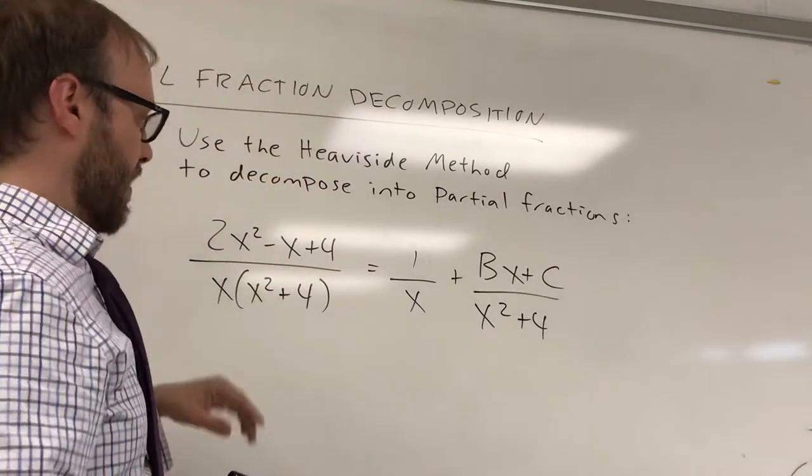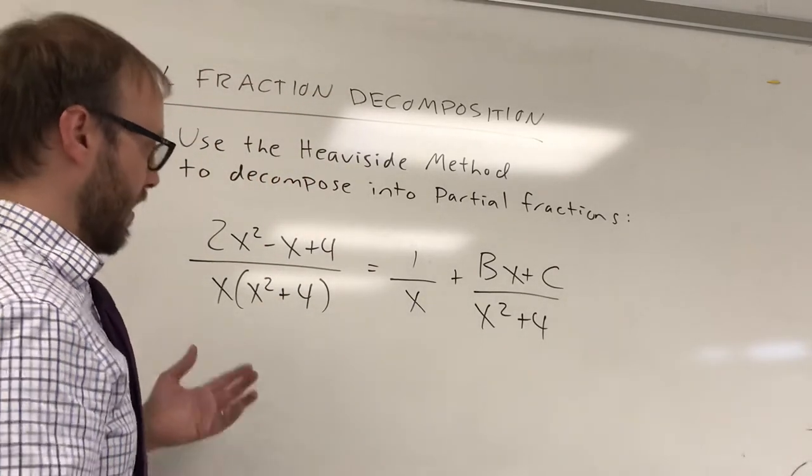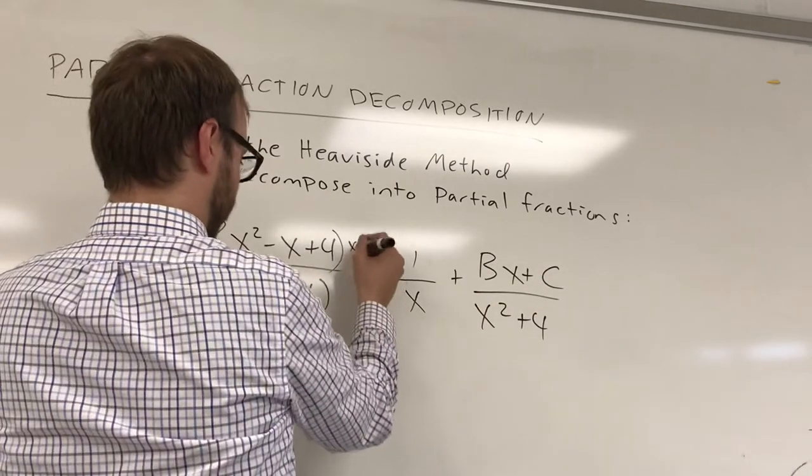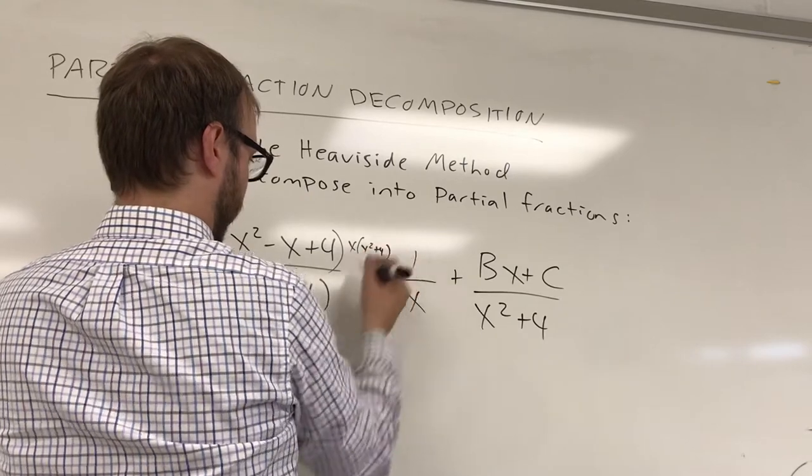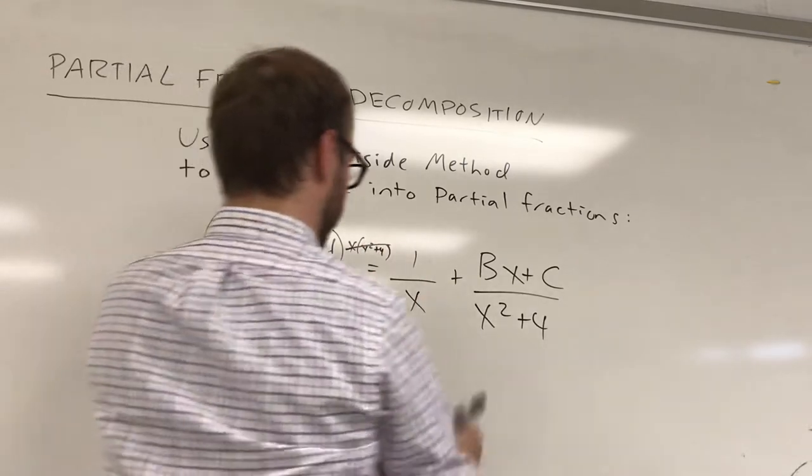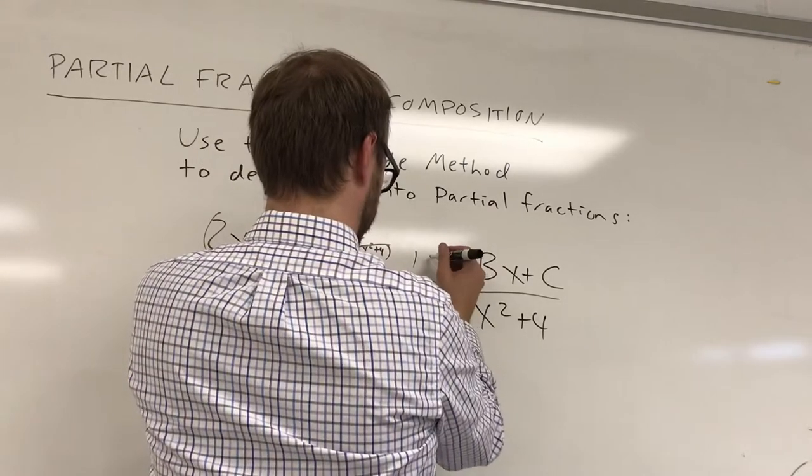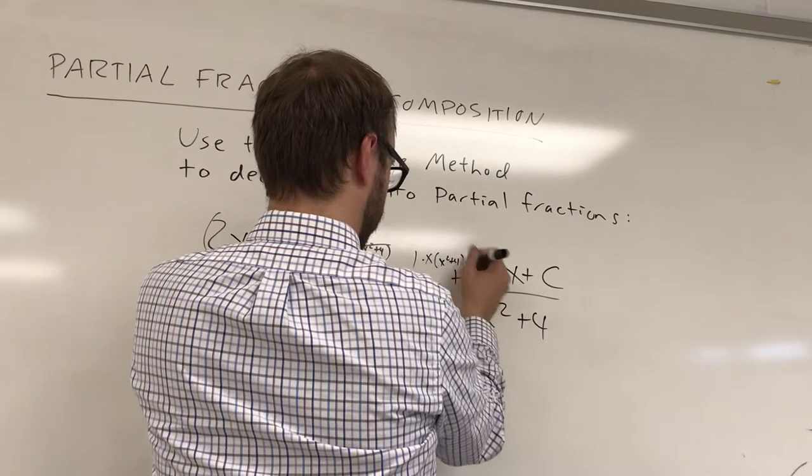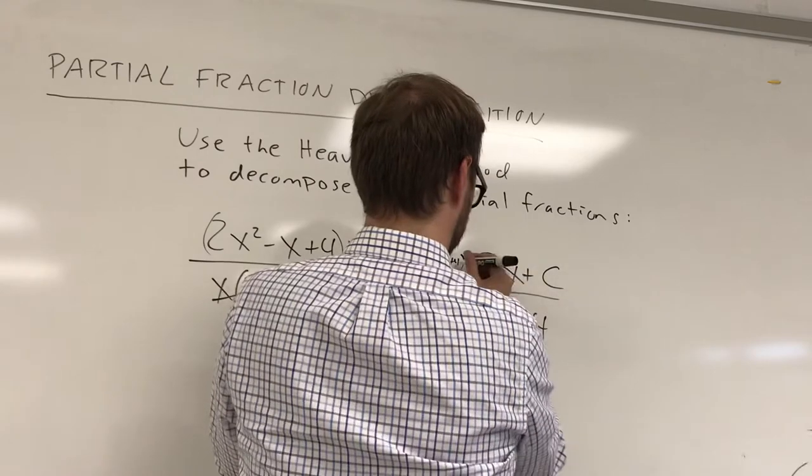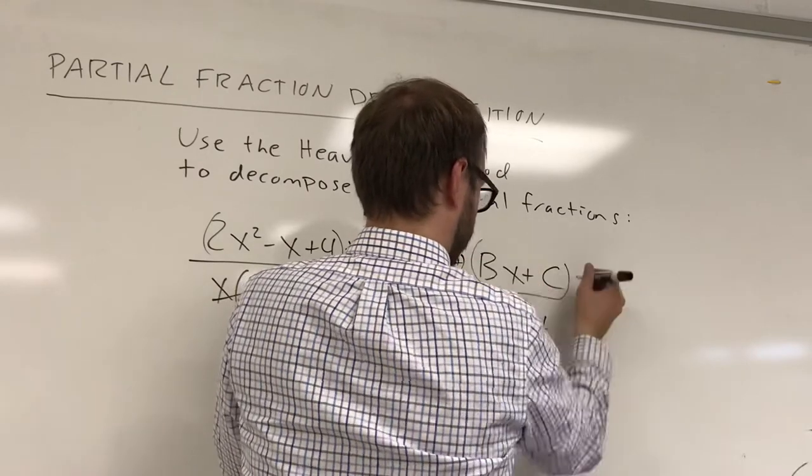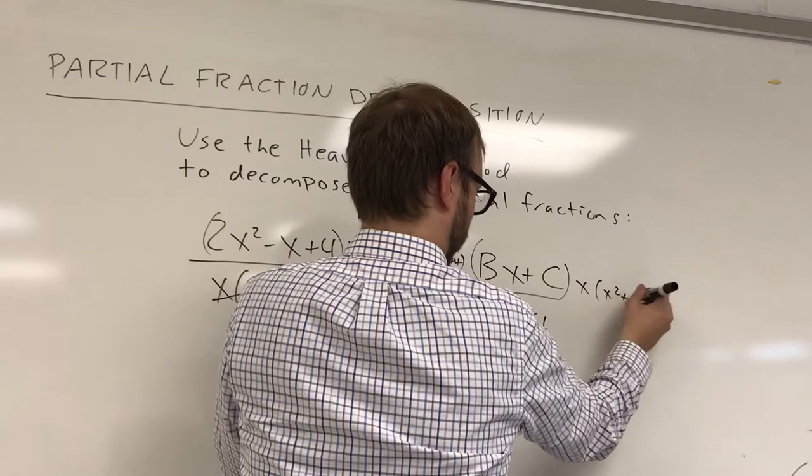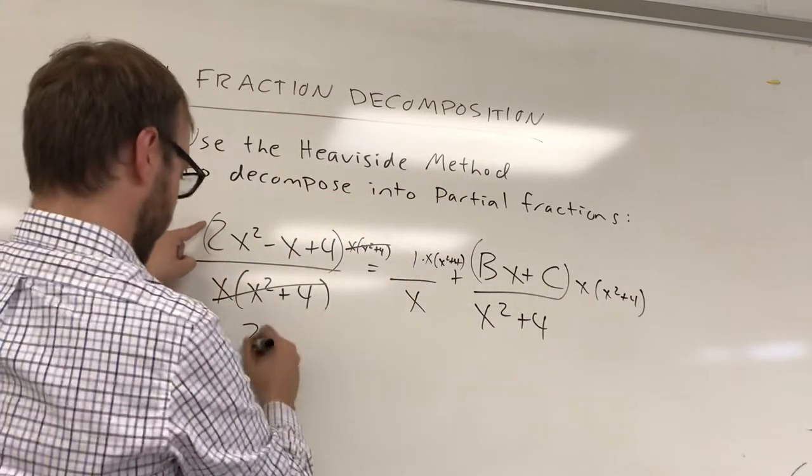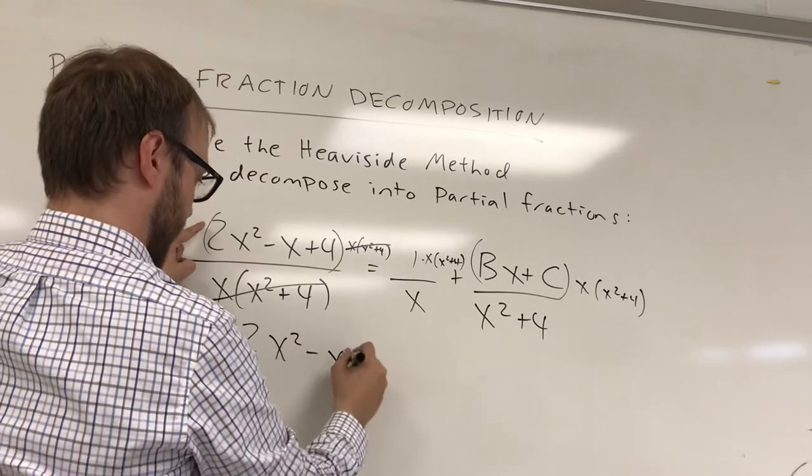So let's say that I wanted to get rid of the denominators here. So I multiply this numerator by x times x squared plus 4 and of course that stuff all cancels. I multiply this term times x times x squared plus 4. And so of course these totally disappear. We've got a 2x squared minus x plus 4.